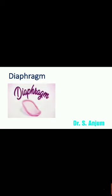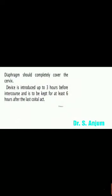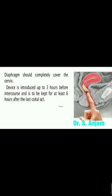The diaphragm is a barrier method used in females. It is an intravaginal device made up of rubber with a flexible metal or spring ring at the margin. The diaphragm should completely cover the cervix; the device is introduced 3 hours before intercourse and kept for at least 6 hours after the last coital act.